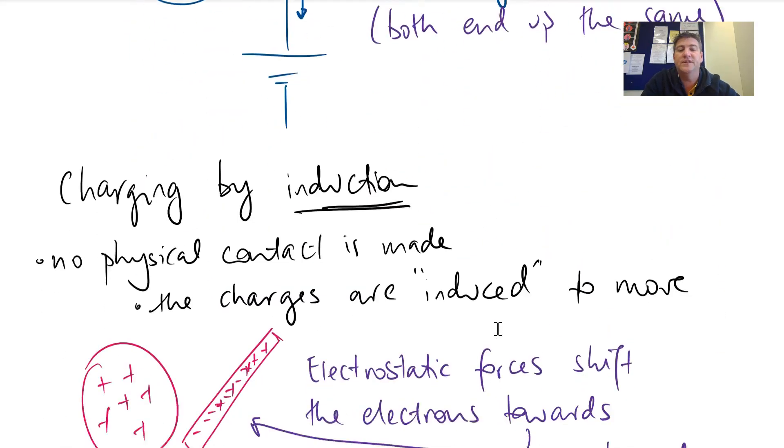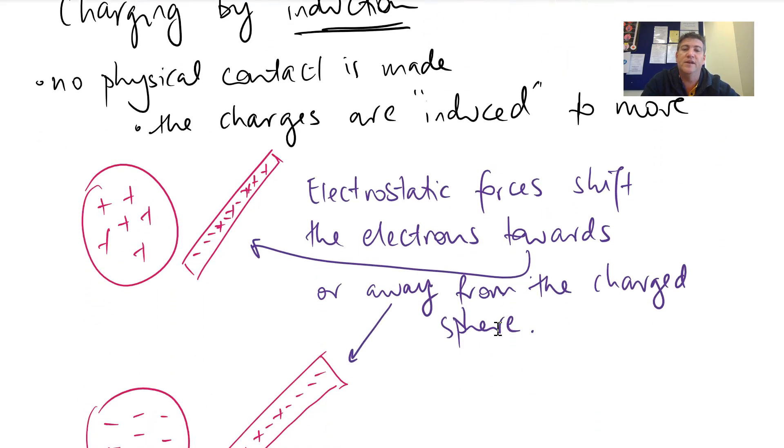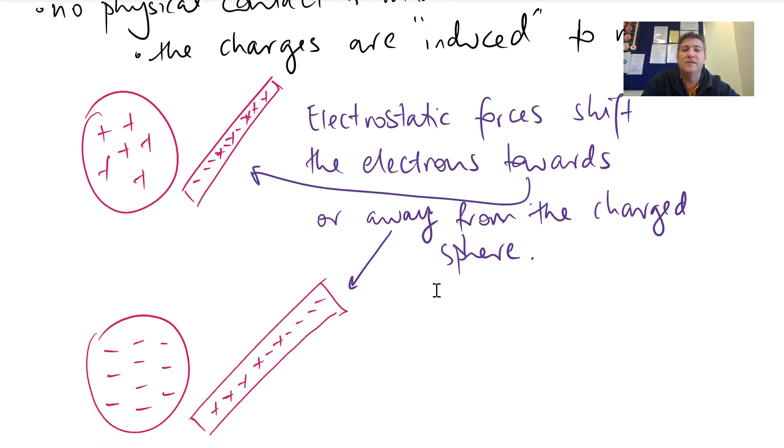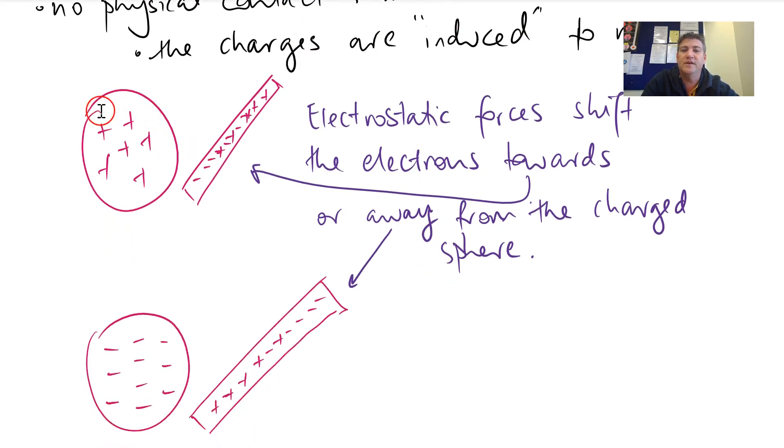The other version here is charging by induction. So here what we're doing is inducing charges to move. There's actually no physical contact made between the two surfaces, though. So in this example, we're going to have a positively charged object here, and something where the charges can actually move. So remember the first video, we're talking about electrostatic forces. These forces will actually try and drag the electrons that they can towards the positive charge. So positively charged here, negatively charged here.